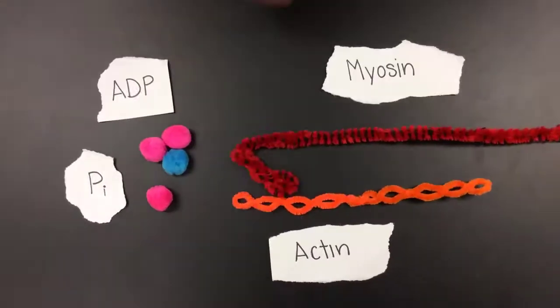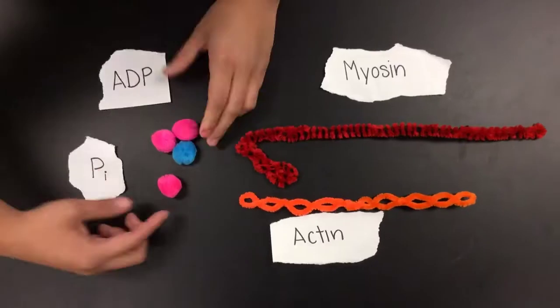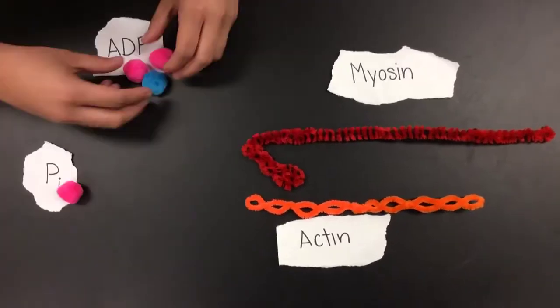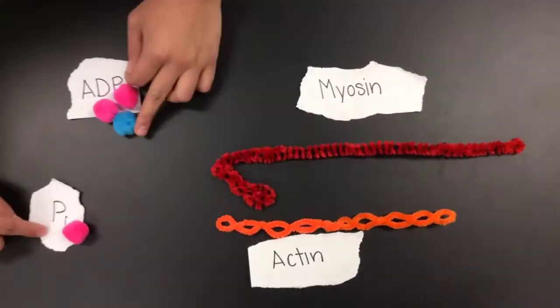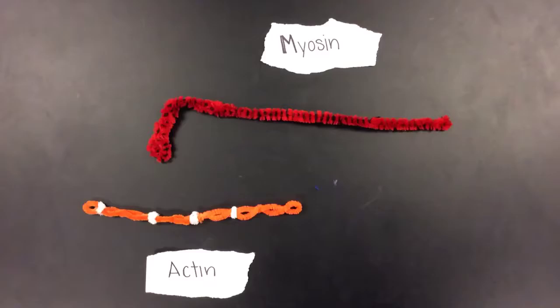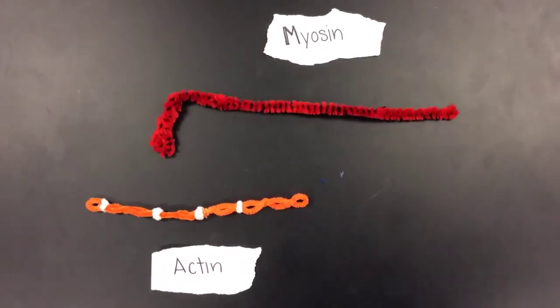The ATP will release one inorganic phosphate and we will be left with ADP and an inorganic phosphate. When the myosin head flexes, the ADP and the inorganic phosphate are released. This process needs to happen over and over again for the contraction to occur.